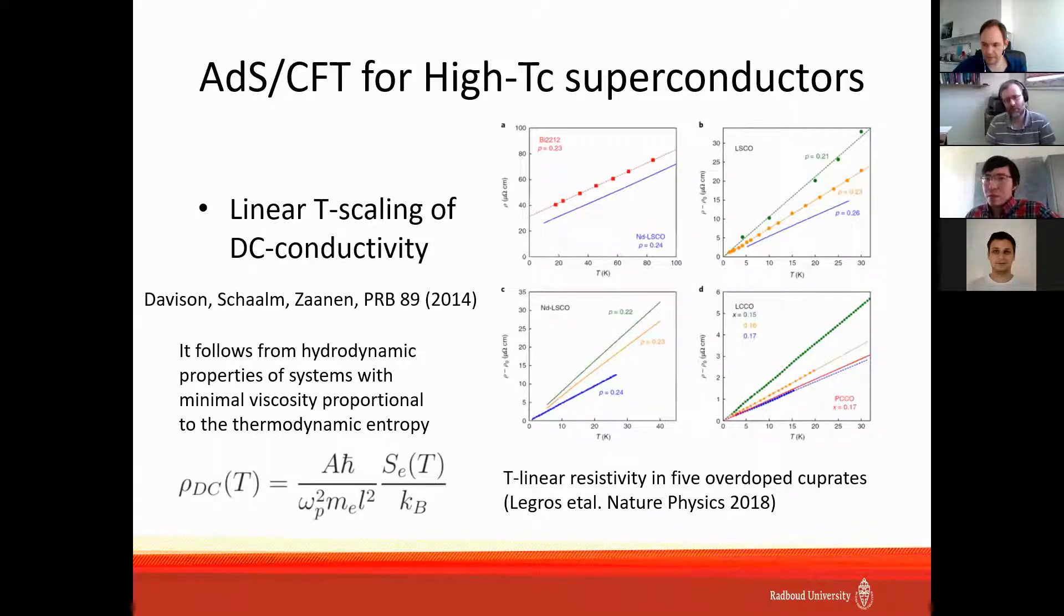We do not build our theory from the basic Hamiltonian, but we can think about some properties and try to build the simplest model which can describe this property. One of these results is linear temperature scaling of DC conductivity, done by Davison, Schalm, and Zaanen in their works.